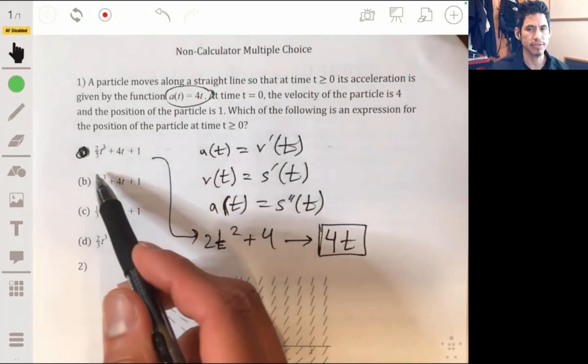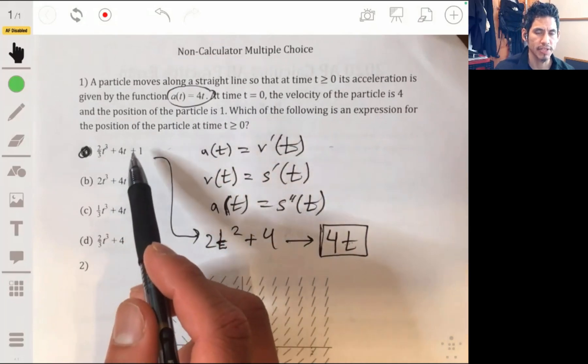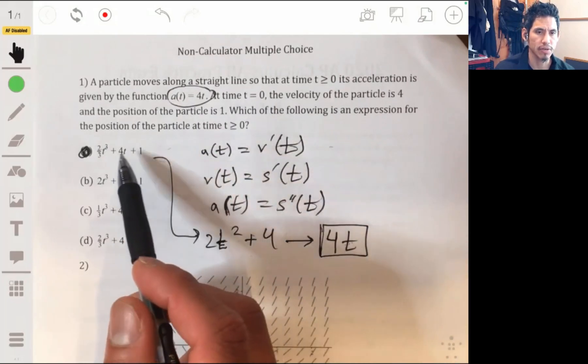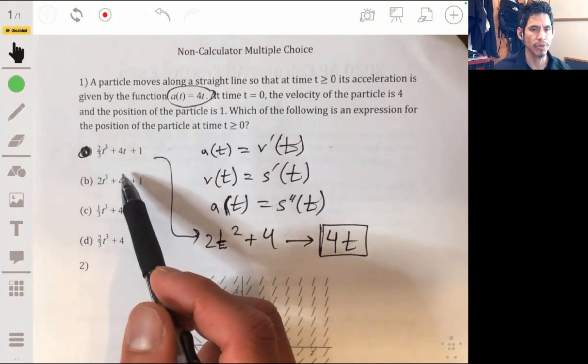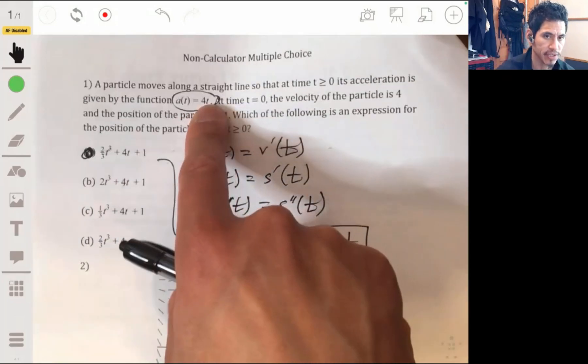You can check the other ones just to see that you won't get 4t, but again, since we're looking for the position function, we want to find which of these would have its second derivative be equal to a(t), which is 4t.